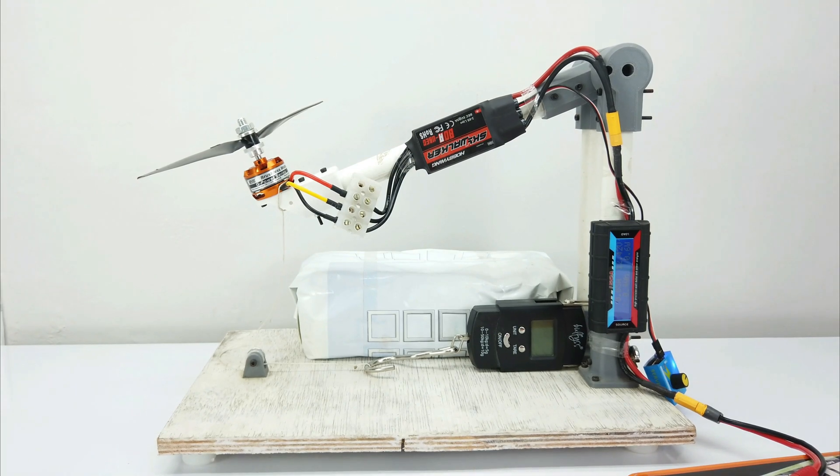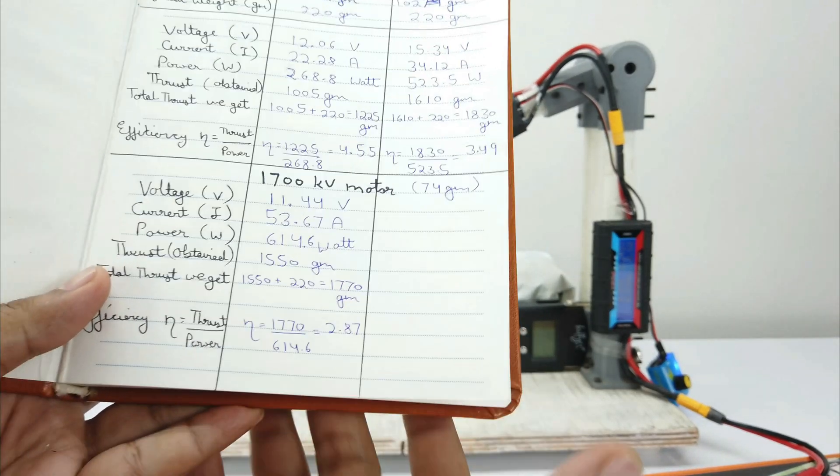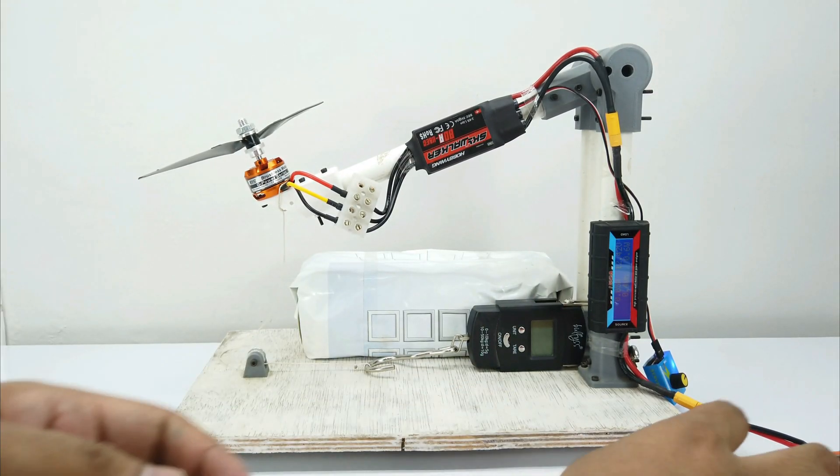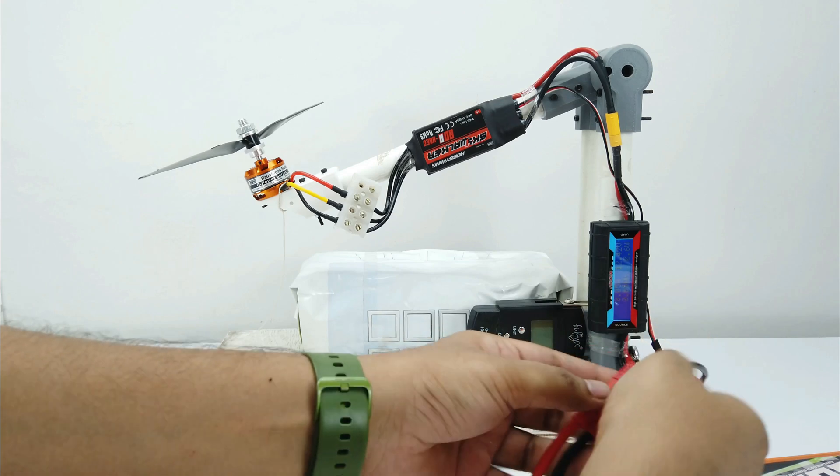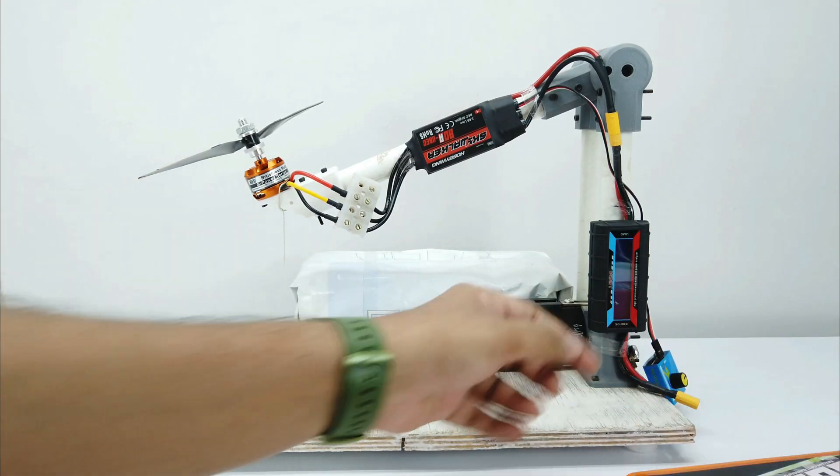Now, I think what will be the thrust at 4S battery as it already gave 1770 grams at 3S. I hope the propeller doesn't come out again. Because of its high thrust, the propeller doesn't suit this friction fit connector. That's why it's recommended to use a bolt and nut connector.